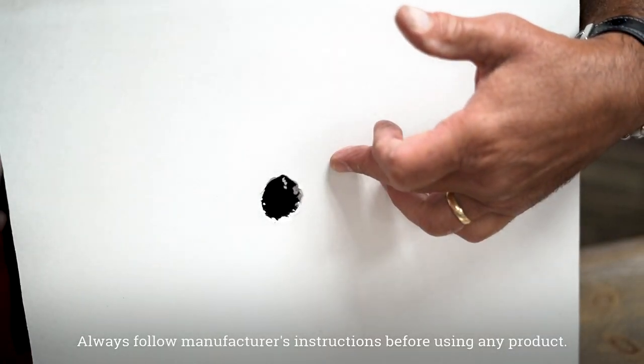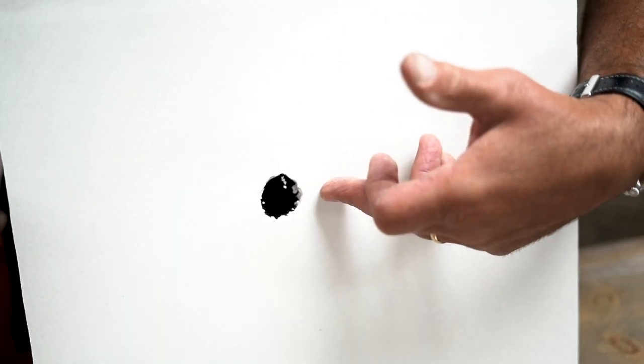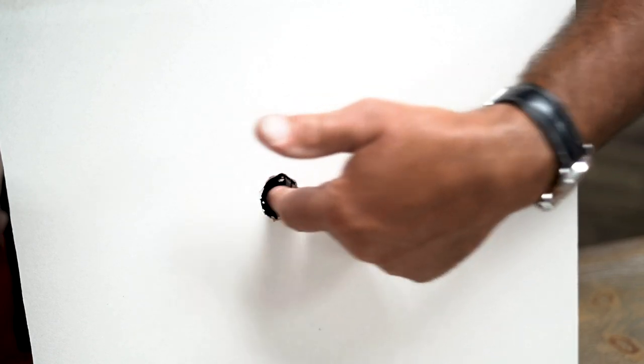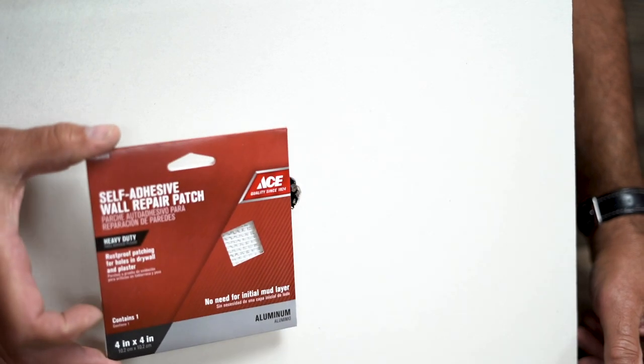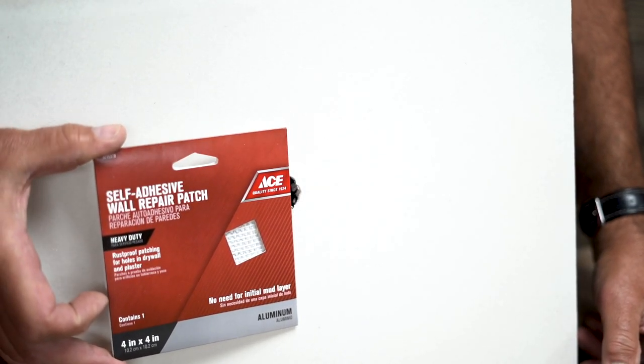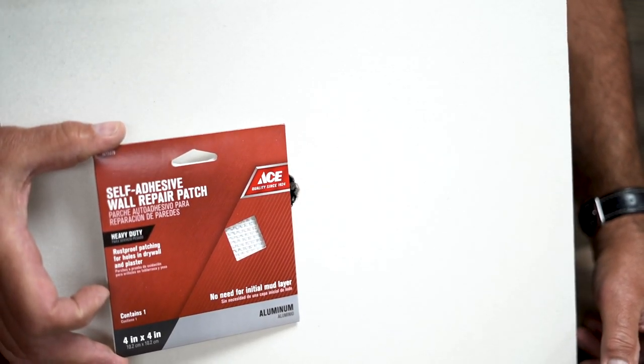So this is a little demo I made popping a hole in here, but let's say a doorknob made a big hole like this and there's nothing behind there that you can screw a piece of drywall to. You'll find these self-adhesive wall repair patches. They come in different sizes.